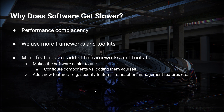So why does software get slower? One of the reasons is the performance complacency I mentioned earlier — a lot of developers just don't seem to care so much about performance. They tend to care more about development speed, so we tend to use more frameworks and toolkits that do more of the work for us and we just have to configure them, rather than coding everything from scratch. So we put in more frameworks, and within those frameworks developers also add more features and responsibilities. Development speed goes up, but unfortunately that often has the side effect that performance goes down.